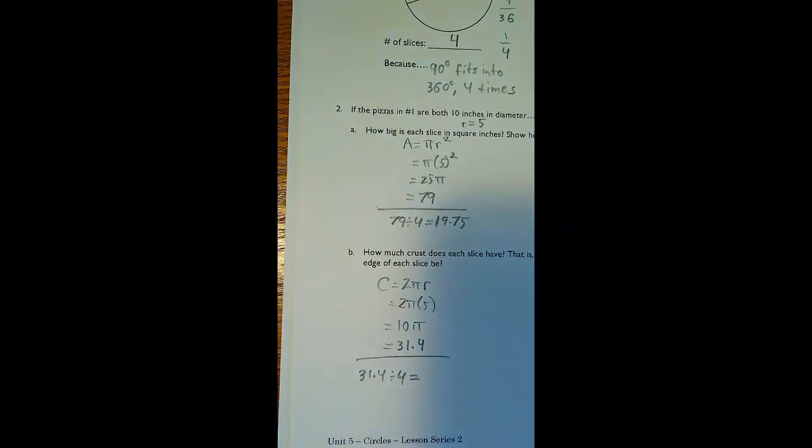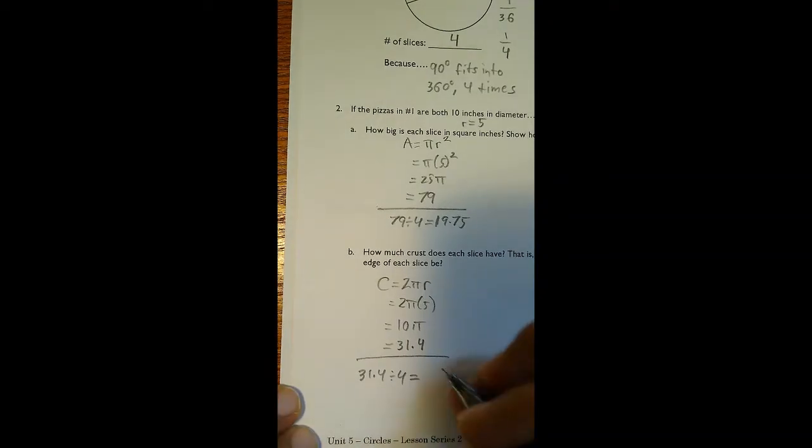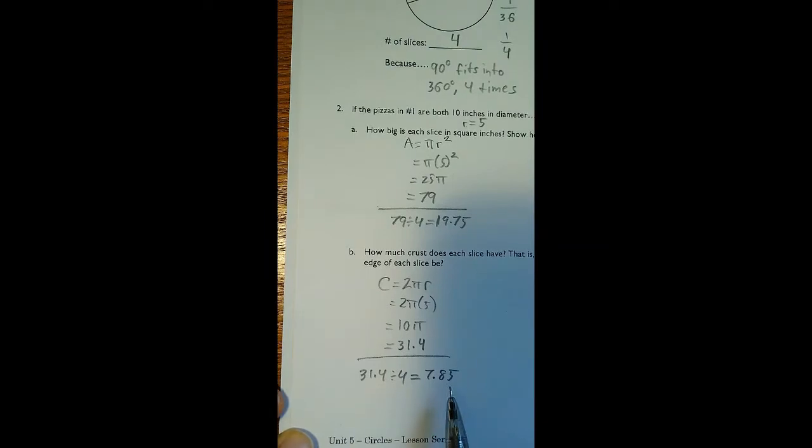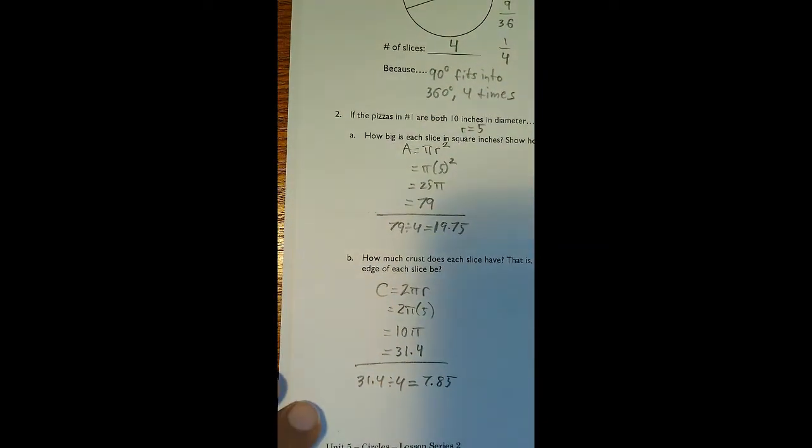What does that come out to? That comes out to 7.85. That's the total length of the crust for our first pizza.